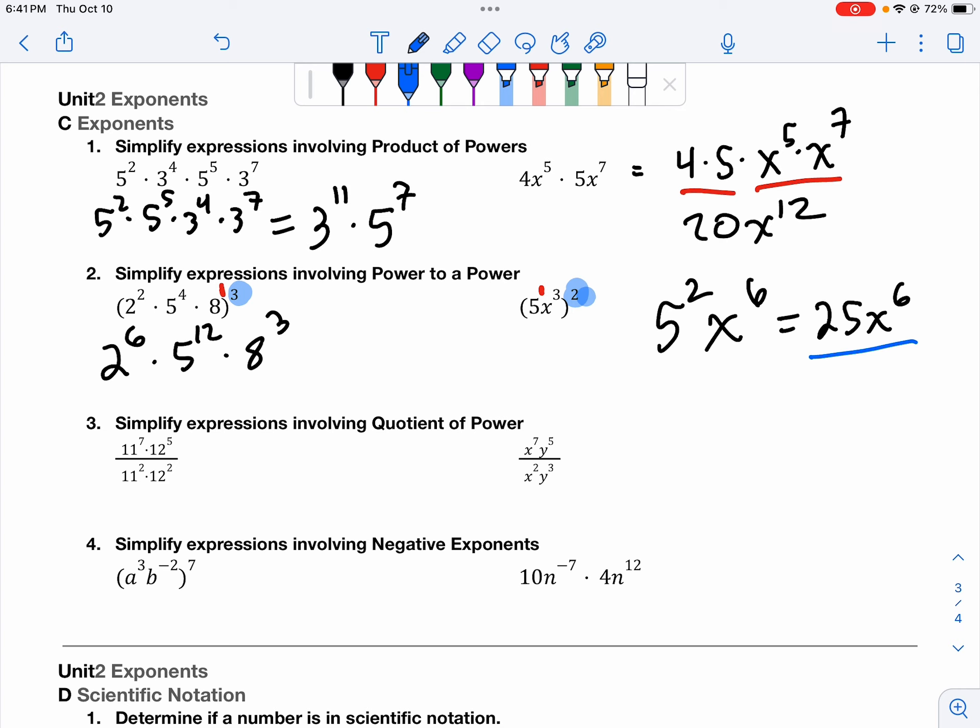Quotient of power. When we have quotients, that means divide. When we're dividing things with exponents, when they have the same base, we can simply subtract their exponents. So we should have 11 to the 5th times 12 to the 3rd. 7 minus 2 is 5. 5 minus 2 is 3. Same thing here with our x and y. We're simply going to subtract the exponents of the like bases. So we're going to end up with x to the 5th, y to the 2nd.